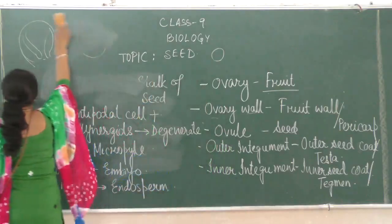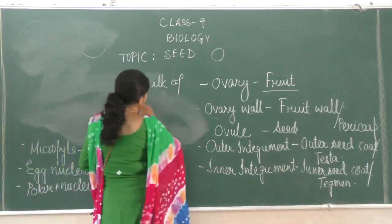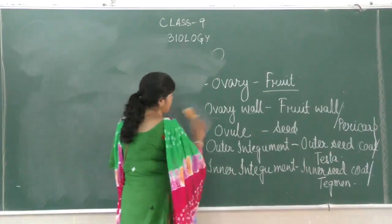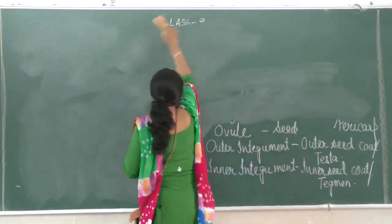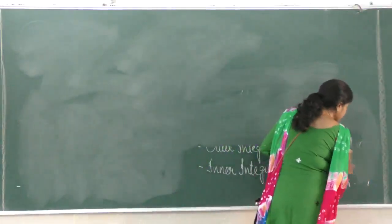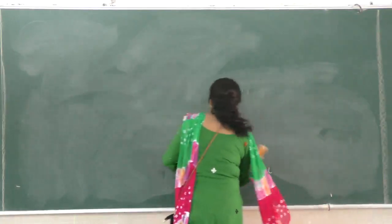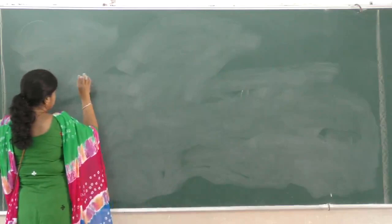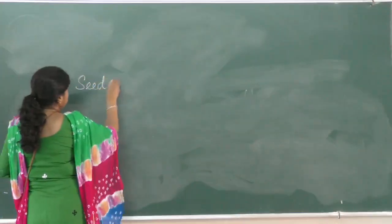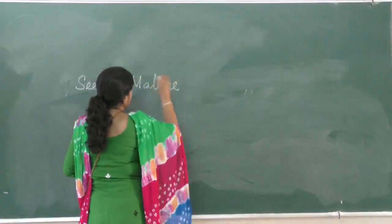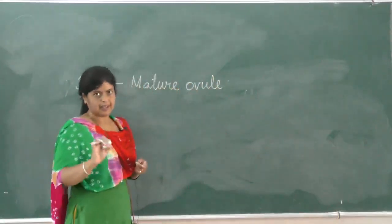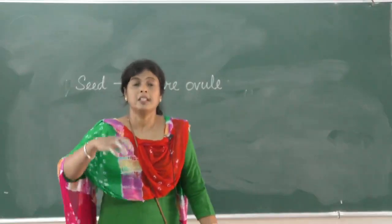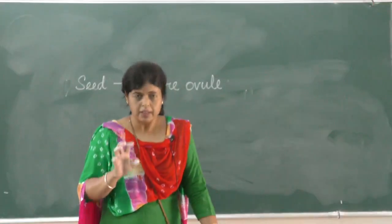Now we come to the seed. What is a seed? A seed is a mature ovule which has the embryo in it. It is found inside the fruit. It not only holds and protects the embryo, but also nourishes it until it germinates. That is the main idea of seeds.